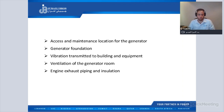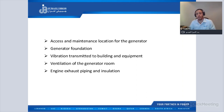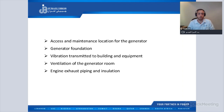We will discuss what are the main factors affecting the generator installation, how to make the foundation for the generator, how to make the proper ventilation for the generator room, the exhaust system and how to calculate the back pressure for the exhaust system, and how to make the inlet and outlet opening for the generator room. Today we will be discussing five of these factors: access and maintenance location, generator foundation, vibration transmitted to building and equipment, ventilation of the generator room, and engine exhaust piping and insulation.